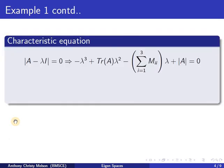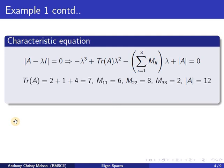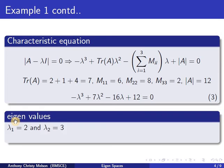The characteristic equation is given by this expression. Here, tr(A), which is the trace of the matrix, is the sum of the principal diagonal elements. M11, M22, and M33 are the principal minors, and determinant of A is 12. So the characteristic equation is given by equation 3, and the roots of the characteristic equation are the Eigen values. Using a calculator, one can find the two distinct Eigen values: 2 and 3.